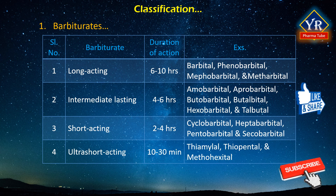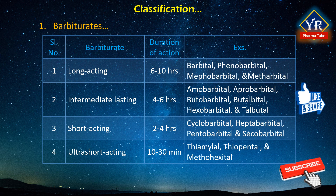The onset of action for short-acting barbiturates falls within 15 minutes, and their hypnotic action lasts for 1 to 2 hours. They are mostly metabolized in the liver and are invariably used in the treatment of insomnia and preoperative medication. Examples include cyclobarbital, heptabarbital, pentobarbital, and secobarbital. The ultra-short-acting barbiturates act almost instantaneously — within a few seconds after administration. Because of this peculiar character, they are used as anesthetics. Single doses have a duration of 20 minutes or less. Examples are thiamylal, thiopental, and methohexital.